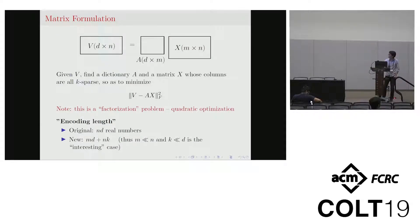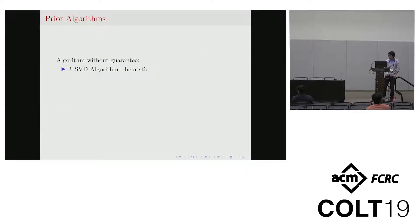And here is basically the same thing we just put this into a matrix formulation. So we have input matrix V and then we would like to decompose it into A times X such that the columns in X has this sparsity at most k, and here we call A to be the dictionary matrix. If we view this as an encoding problem, originally we need nd real numbers to represent our input, but now if we have this decomposition we need md plus nk real numbers to represent our input data.